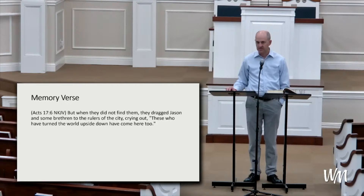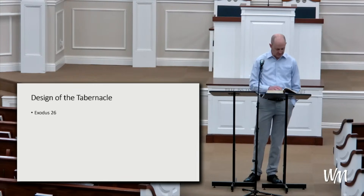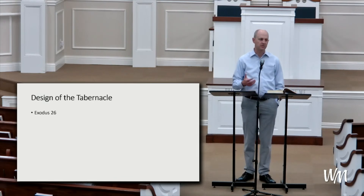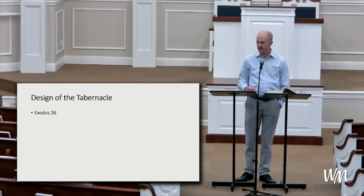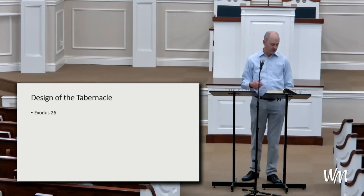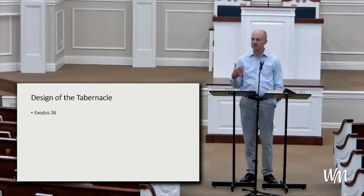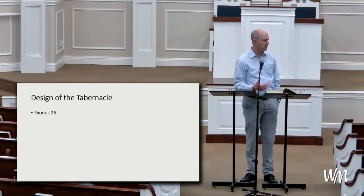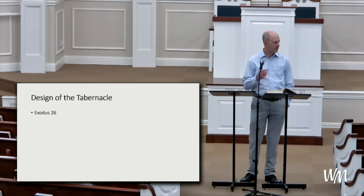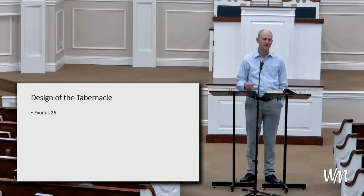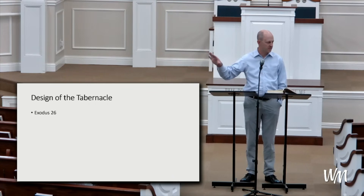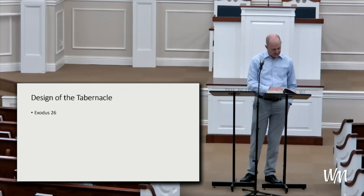Let's turn over to Exodus chapter 26. As we have been thinking about the true tabernacle in heaven, we're going to notice how the Old Testament tabernacle — that which was prescribed to Moses by God — was representative. As we read Exodus chapter 26, try to visualize what we're reading. Think about how detailed the directions were that God gave to Moses and how important that is when we think about its representation of something that was to come through Christ.